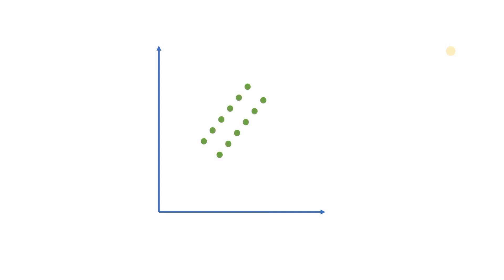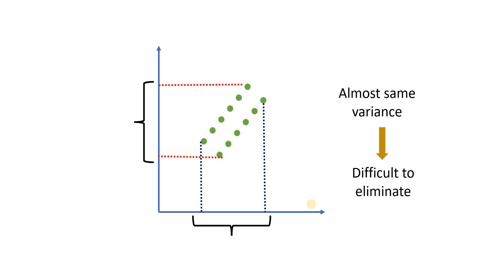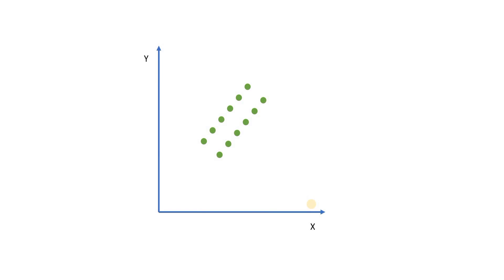Let's take one more example. If we have data and take its projection along the X dimension, we get a certain variance. If we take the projection along the Y axis, we get almost the same variance. In this case we are unable to decide which dimension to eliminate, because the variance is almost the same on both axes. This is where Principal Component Analysis comes into the picture.